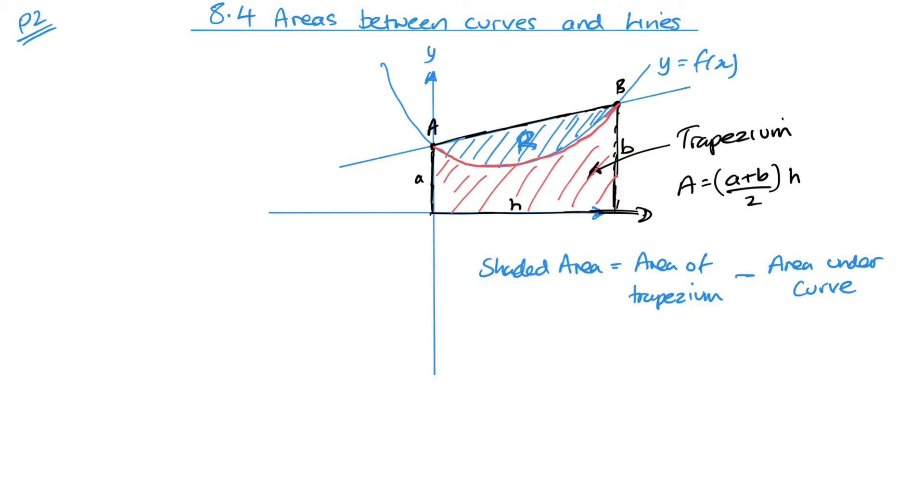So what you're doing is you're taking what you already know about curves and how to find the area under them, and then you're looking for other shapes that you know to find the area of those. And essentially the difference in this case, the difference in the two areas will give me this shaded area here, this blue shaded area. Sometimes I might need to add areas together. It's just looking for those additional shapes.